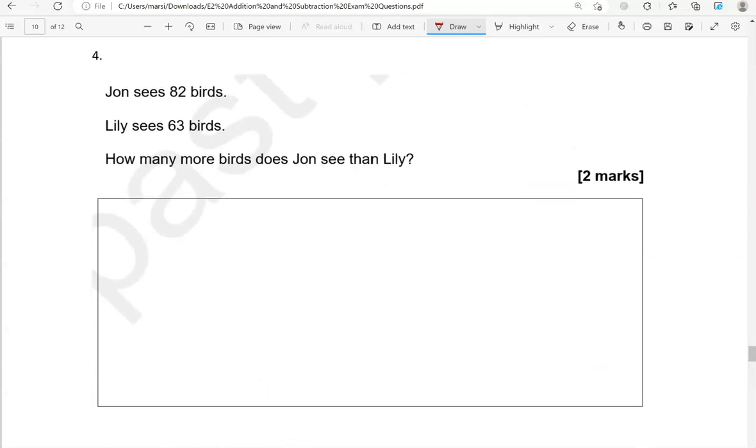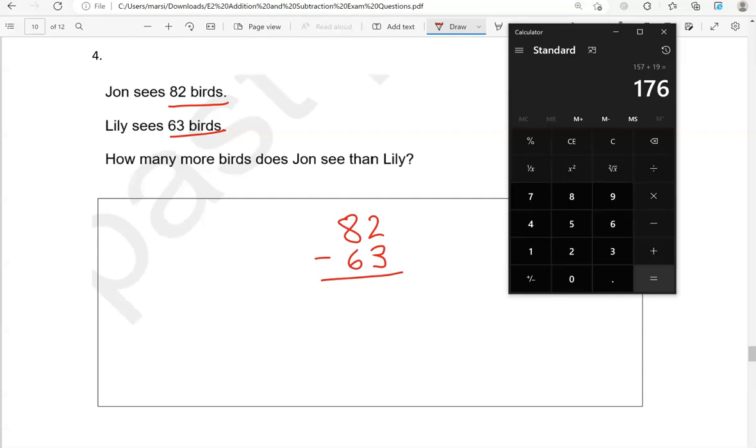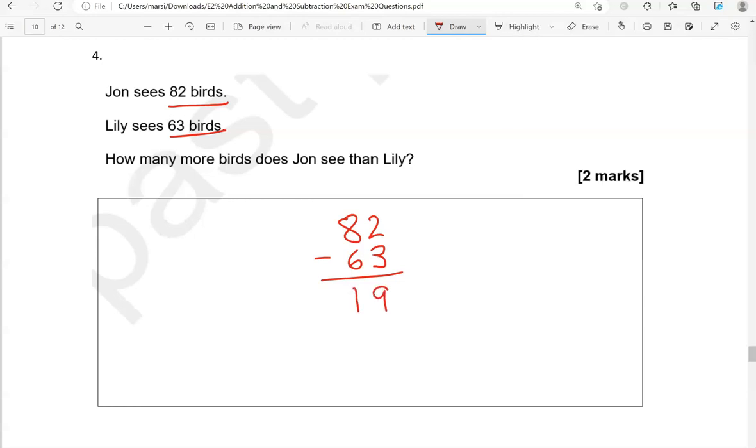John sees 82 birds. Lily sees 63 birds. How many more birds does John see than Lily? So we're going to work out the difference. So 82 take away 63 should tell us how many more, which is 19 more birds.